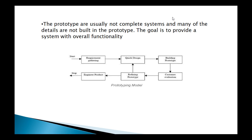Once the prototype is built, it is evaluated by the customer. A product sample is developed and evaluated by the customer. This cycle continues — developing and evaluating the sample — until the sample model is satisfied by the customer. Once the customer is satisfied with the prototype, then the actual product is going to be developed.